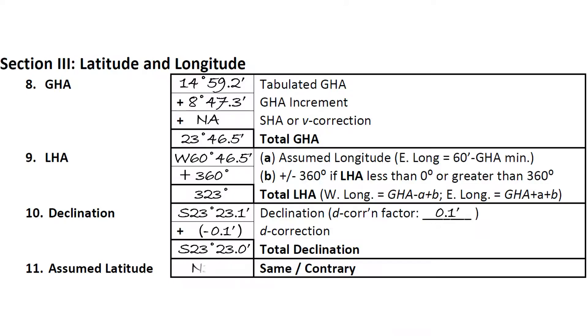We note our assumed latitude on the sight reduction form. We also need to note whether the assumed latitude is in the same hemisphere as our declination, circling either same or contrary for assumed latitude.